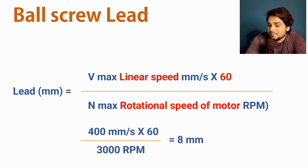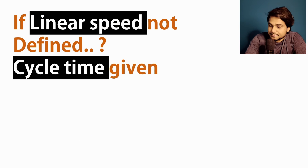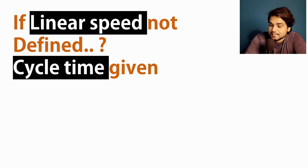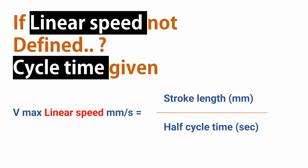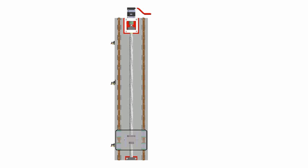In many cases, linear speed will not be given directly — cycle time will be given instead. Then we calculate Vmax using the formula: Velocity = Distance / Time, where distance is the stroke length and time is half the cycle time — the time taken for one direction of travel.